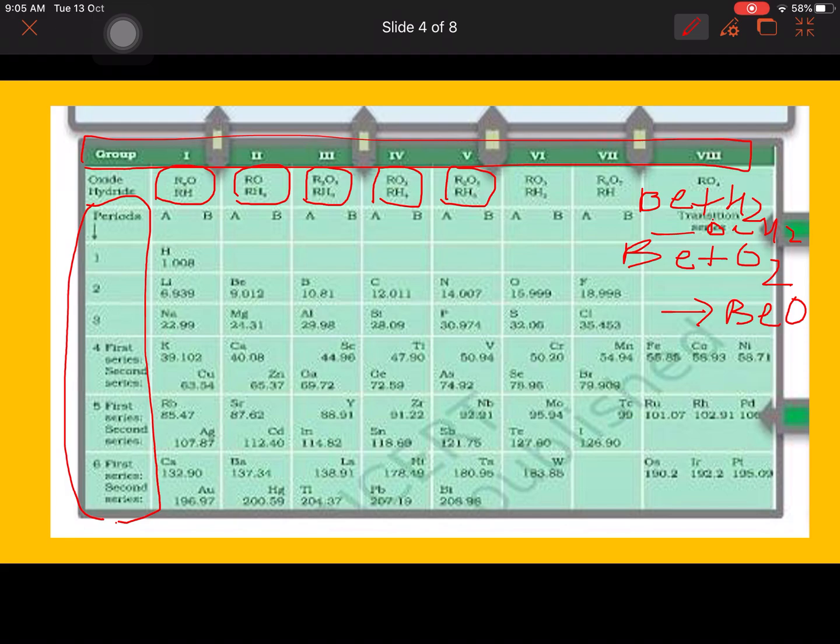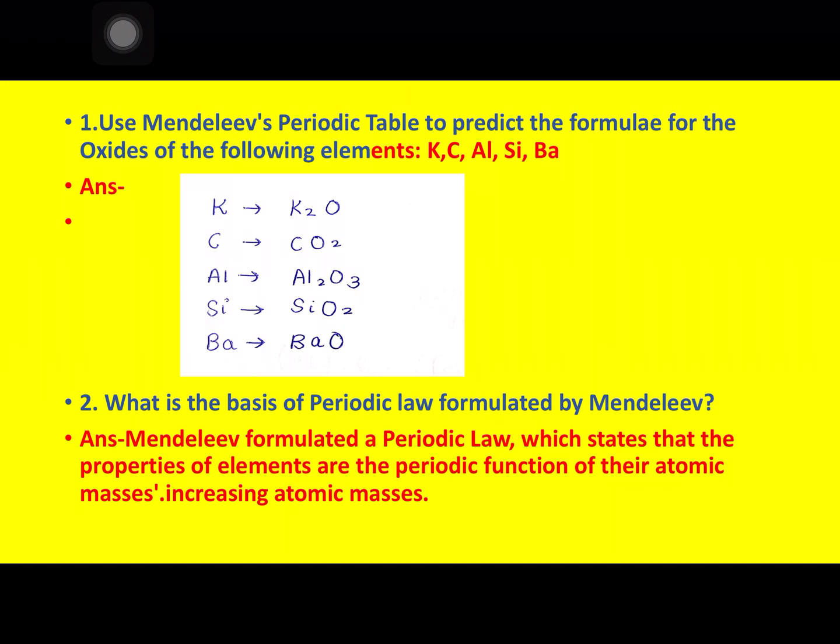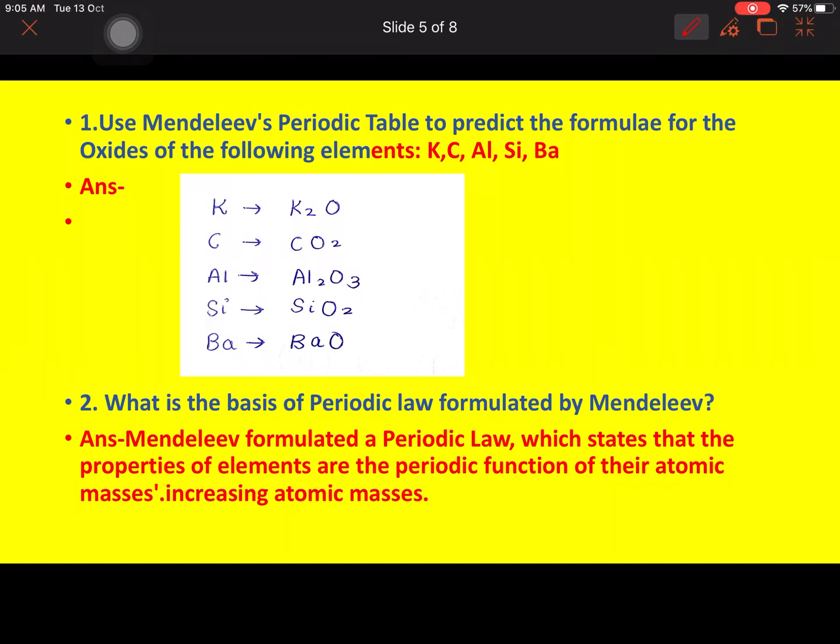Now the question answers. By using Mendeleev's periodic table, we have to predict the formula of oxides of elements: potassium is K2O, carbon is CO2, aluminum is Al2O3, silicon is SiO2, and barium is BaO. Next question: what is the basis of periodic law formulated by Mendeleev? Mendeleev formulated a periodic law which states that the properties of elements are periodic function of their atomic masses, that is increasing atomic mass.